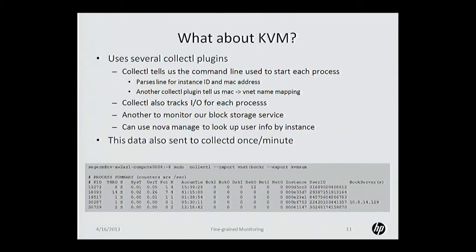A little bit of a gear shift — I want to talk about Nova. Same kind of scenario: I wrote a Collectal plugin that runs on the Nova server, not in the VM, running on the server, and this looks at VMs. The interesting thing is if you look at the command line that started the VM, it tells you the Nova instance ID, which is neat. It also tells you the MAC address of the virtual NIC. Given the MAC address of the virtual NIC, you can look in some of the system tables and figure out what its network name is, like vnet_13 or vnet_18. Then you can go inside Collectal and ask for the bandwidth on that particular virtual network.